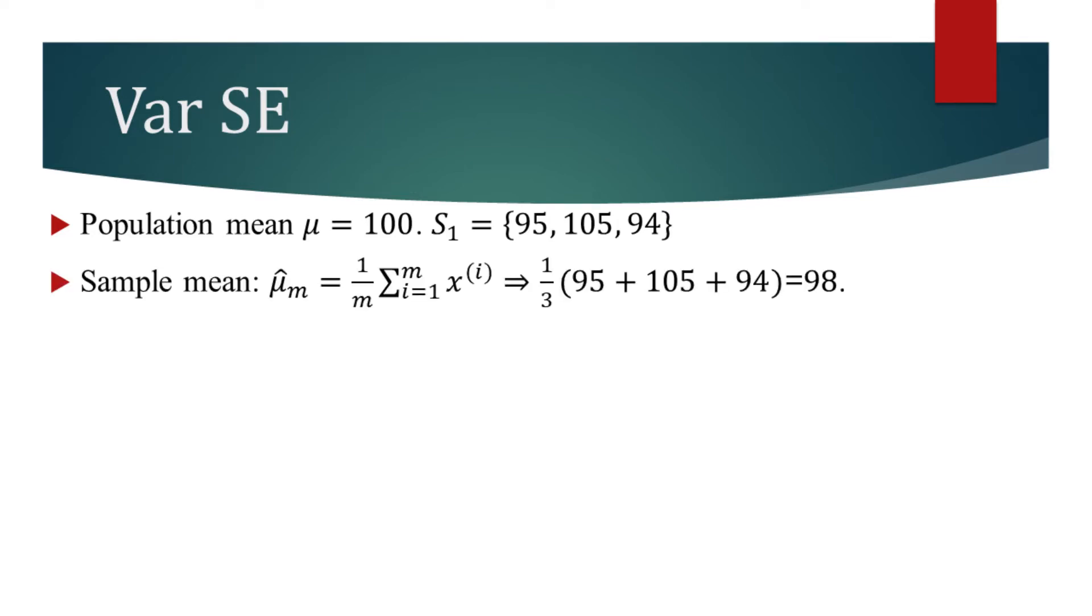If we estimate the mean of the population using the sample mean, we will find it equaling 98. Let's say we have obtained another set of samples. If we find the sample mean again, we will find that it equals 102.